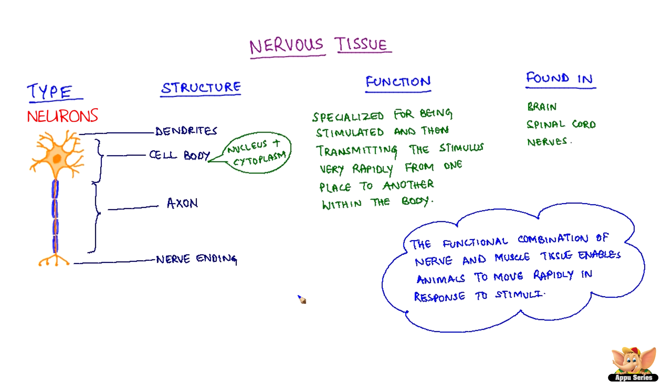The functional combination of nerve and muscle tissue is fundamental and enables animals to move rapidly in response to stimulus.